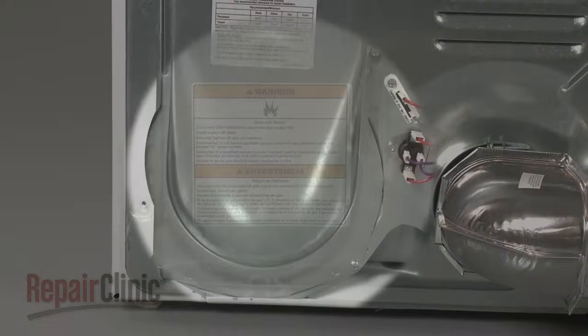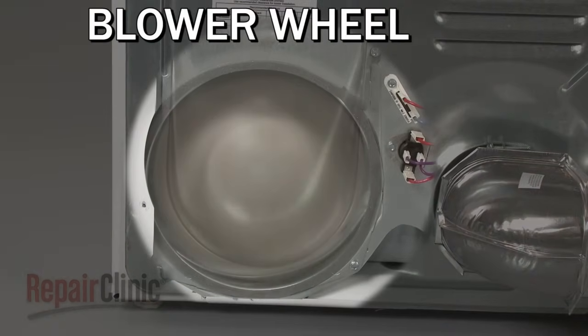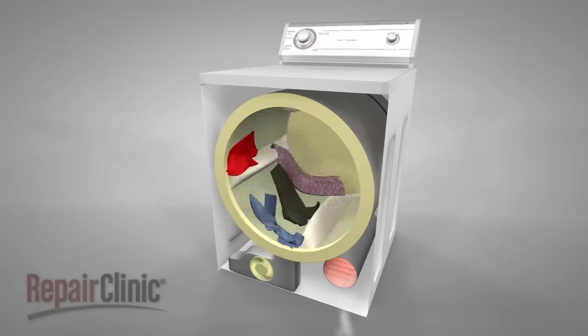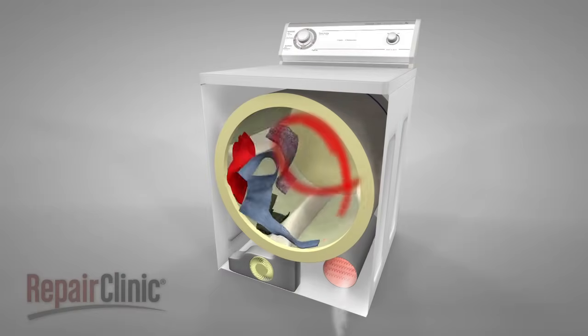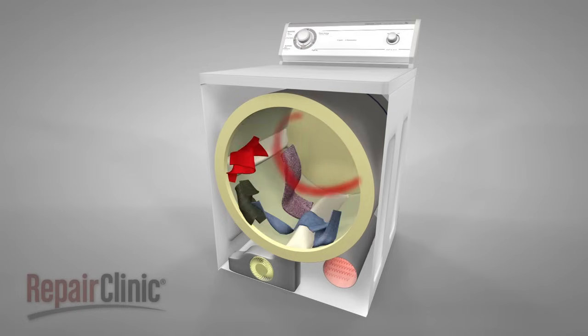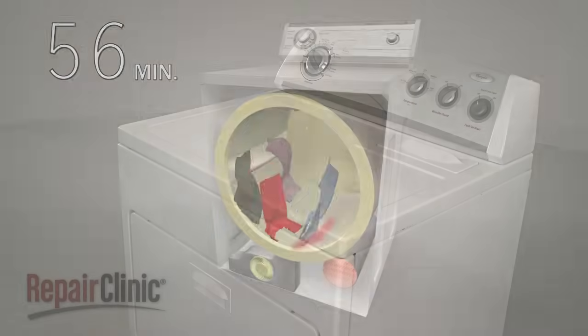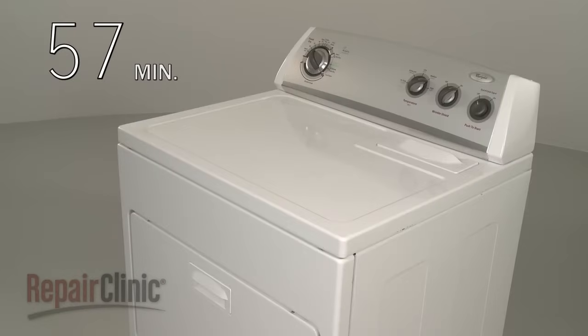When operating, the dryer uses a blower wheel to draw air in from the front or rear of the appliance. The air is heated and circulates through the clothes as the drum rotates. The hotter the air, the more effective it is at removing moisture from the clothes. You can expect an average load of clothes to take about 60 minutes to dry.